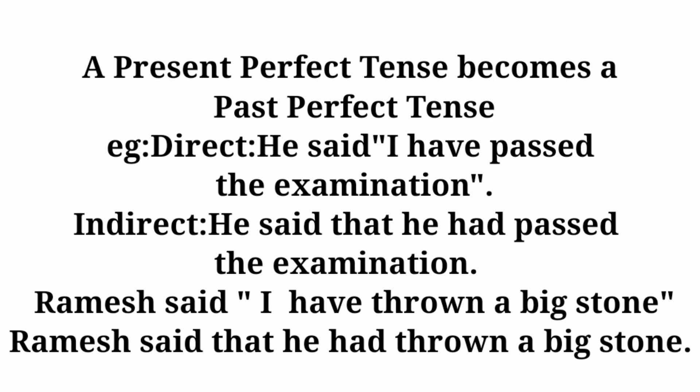A present perfect tense becomes a past perfect tense when we change direct speech into indirect speech. For example: he said, 'I have passed the examination.' becomes he said that he had passed the examination. Ramesh said, 'I have thrown a big stone.' becomes Ramesh said that he had thrown a big stone.